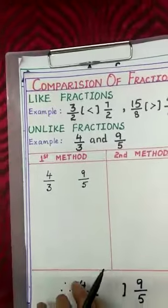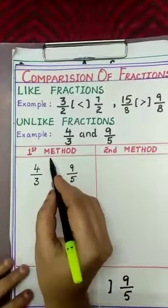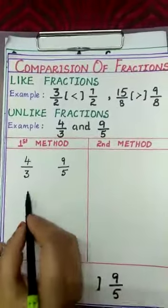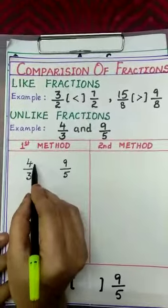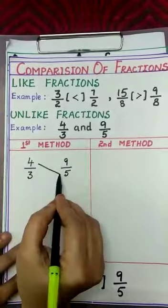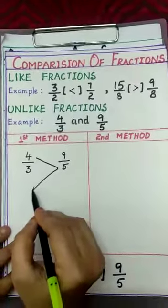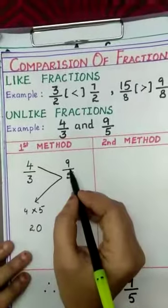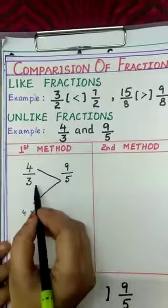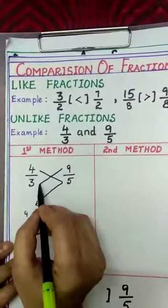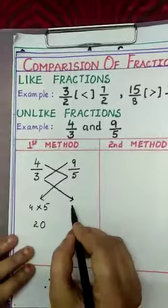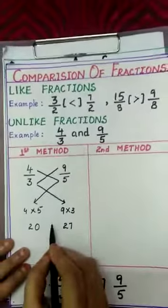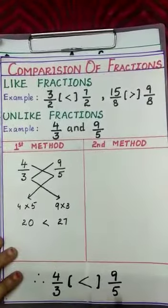Comparison of unlike fractions can be solved in two methods. The first is the cross multiplication method. Take the fractions 4/3 and 9/5. We multiply the first fraction's numerator with the second fraction's denominator and write the product on the left hand side: 4 × 5 = 20. Next, we multiply the second fraction's numerator with the first fraction's denominator and write the product on the right hand side: 9 × 3 = 27. Since 20 is less than 27, 4/3 is less than 9/5.